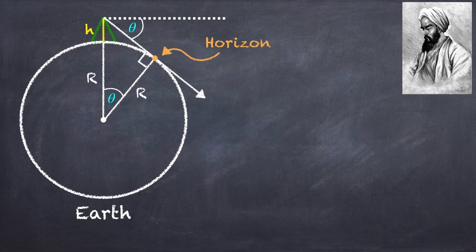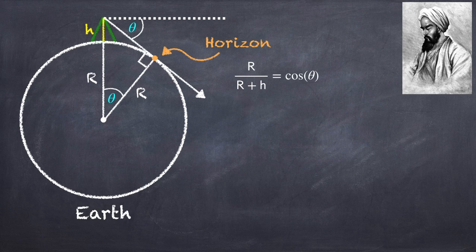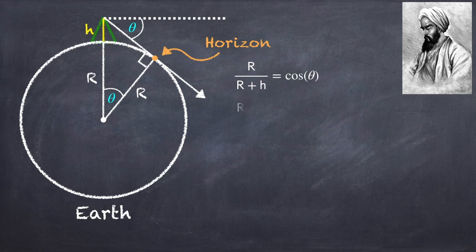Now recall that cosine of an angle is adjacent over hypotenuse, and so that means that I have that r over r plus h equals cosine theta. I can multiply both sides by r plus h, and then bring all the r terms to one side.